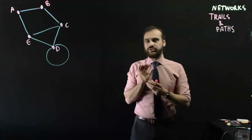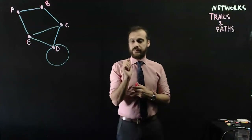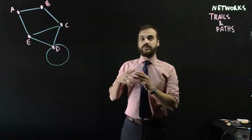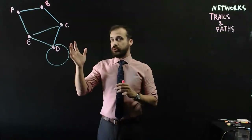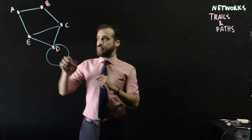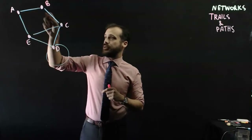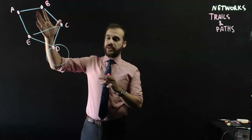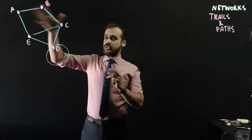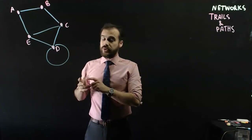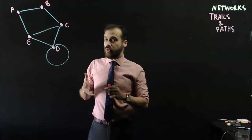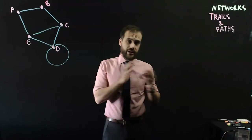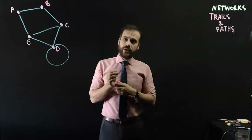Still looking at networks here, we're going to look at trails and paths. In a previous video, we talked about something called a walk. A walk is simple — you just go from A to B to C to E to D to C to B. Any sort of trip through a network is a walk. So everything I show you from now until the end of this video is going to be a walk.